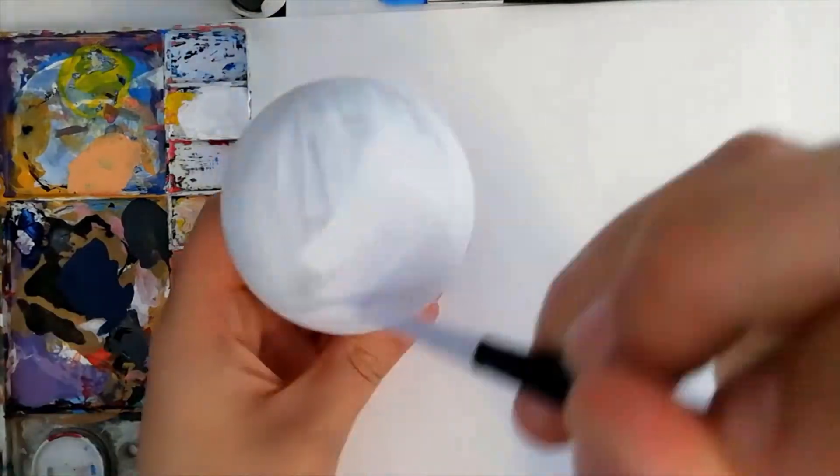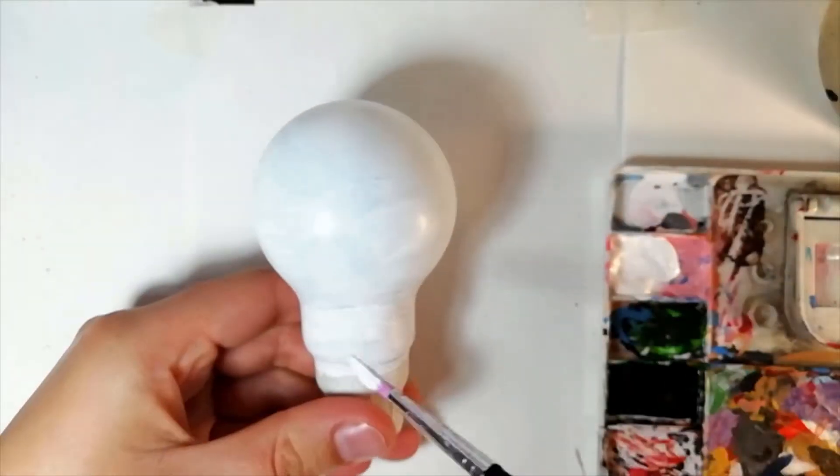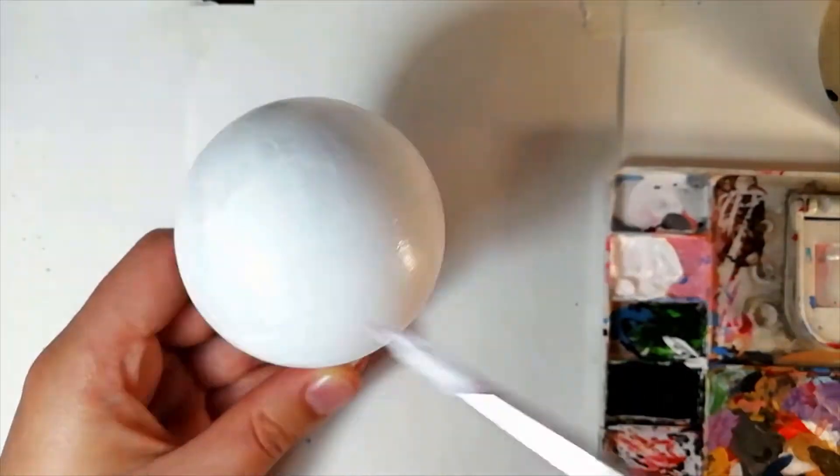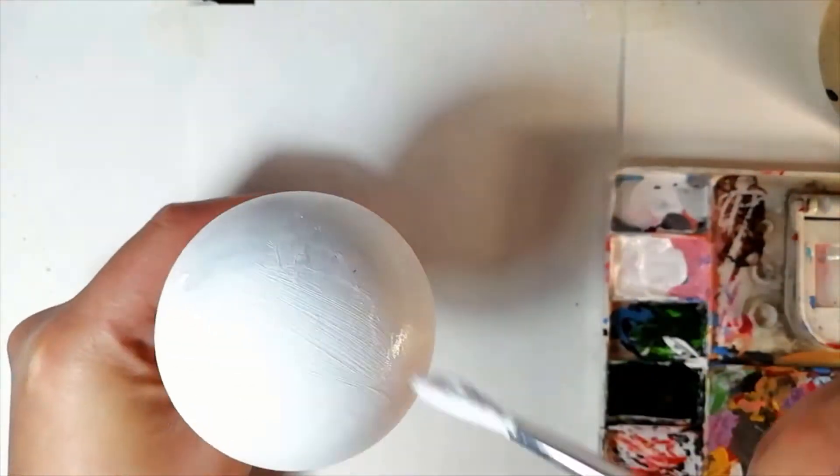I started by painting the light bulb with a base layer of white. As you will see, to get the coverage I wanted I ended up doing several layers of white paint before starting to add the color on top.